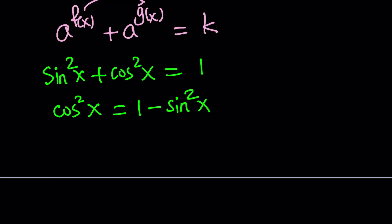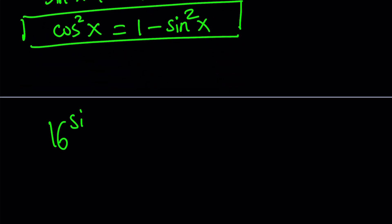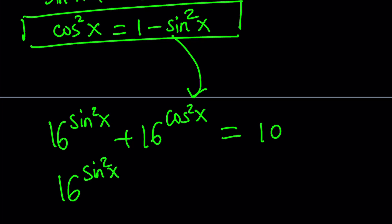This is what we're going to use in our equation. Let's replace it. 16 to the power sine squared x plus 16 to the power cosine squared x equals 10. I'm going to replace cosine squared with this. That gives me 16 to the power sine squared x plus 16 to the power 1 minus sine squared x equals 10.